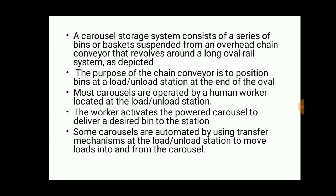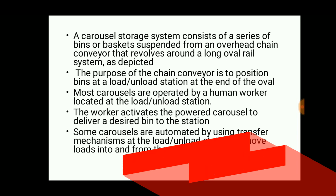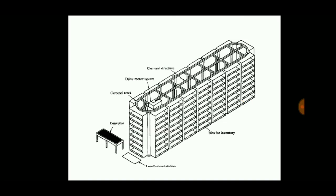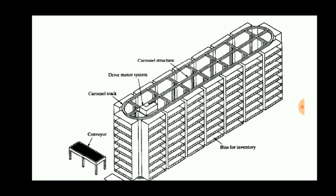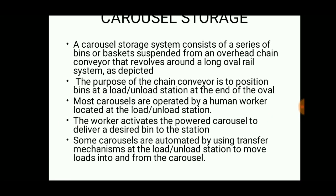It has an overhead chain conveyor that revolves around a long oval rail system, as we see in the picture. The long overhead rail system carries bins used for the storage and transferring of materials. The purpose of the chain conveyor is to position the bins at the load and unload station at the end of the oval.